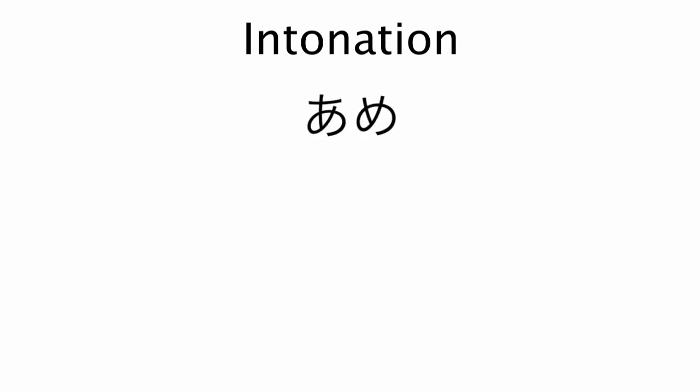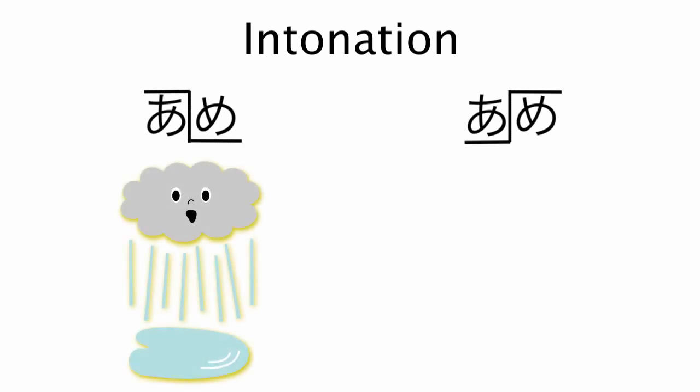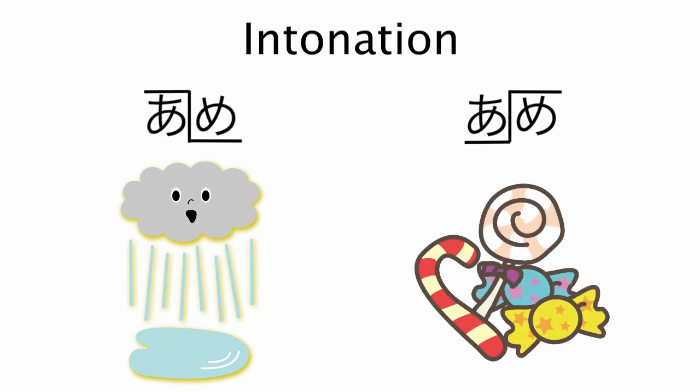In many languages, including Japanese, the same word with different intonational melodies may have different meanings. The meaning of a word varies depending on its intonation. In the Tokyo dialect of Japanese, 'ame' with one melody means rain, and with another means candy.